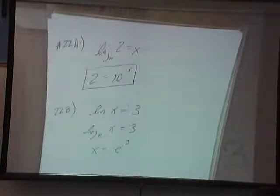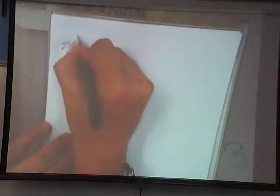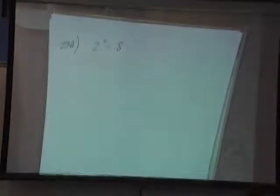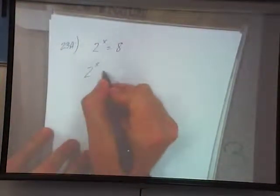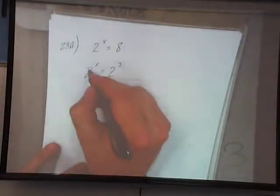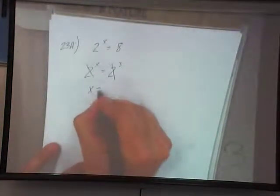Questions on 22? Alright, 23. 23a, they want us to solve. 2 to the x power equals 8. What do we need to do here? 3. What if we can't do it in our head? What's our plan? Yes, make the bases the same. That's right. Very good. 2 to the x power is equal to 2 to the third power, right? So since our bases are the same, we can drop them. Like it's hot. So x equals 3.